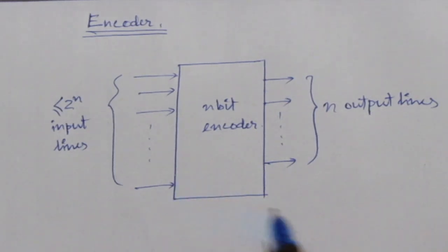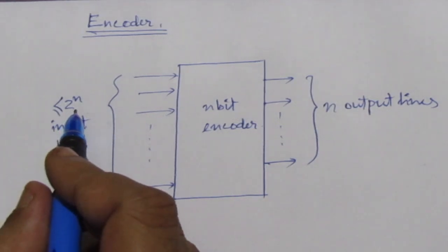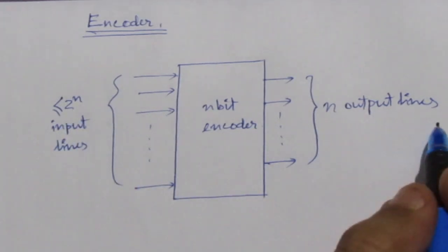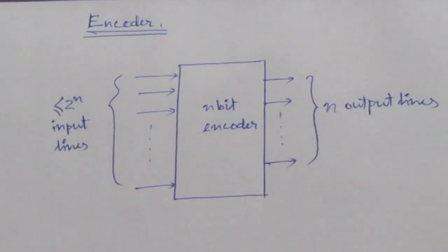Here it is the opposite. That means we have 2 to the power n or fewer number of input lines and we have n output lines. The output lines as an aggregate generate the binary code corresponding to the input value.